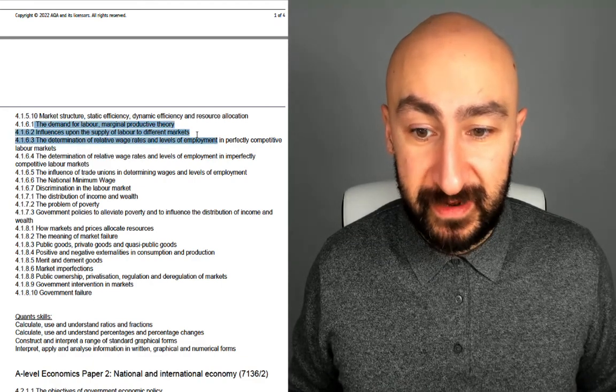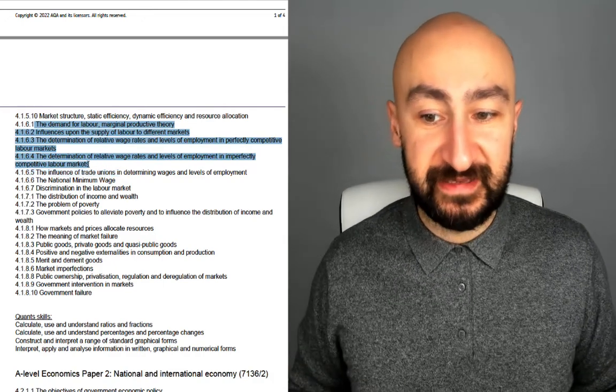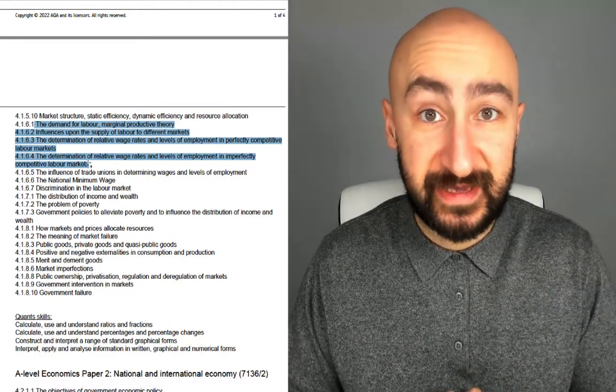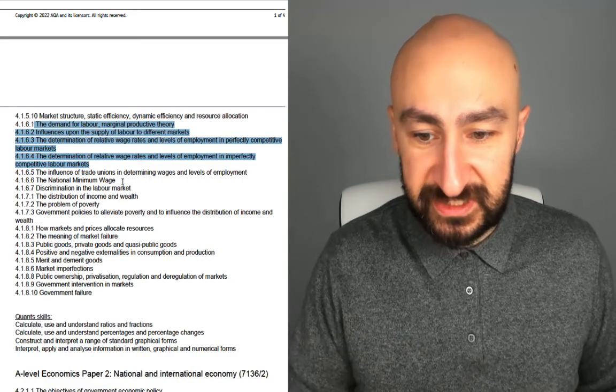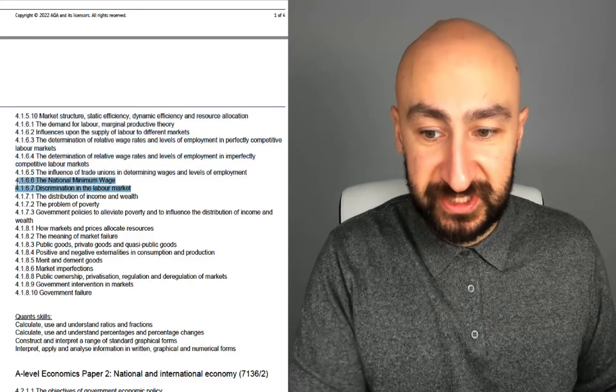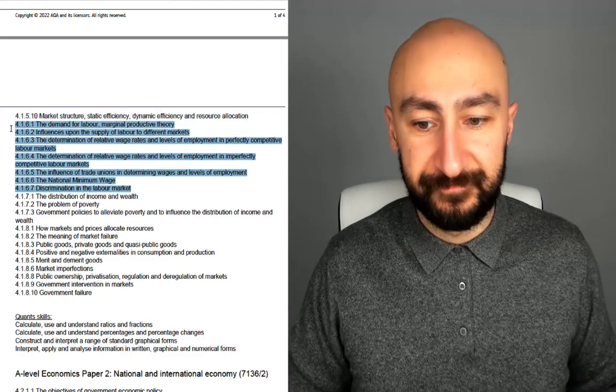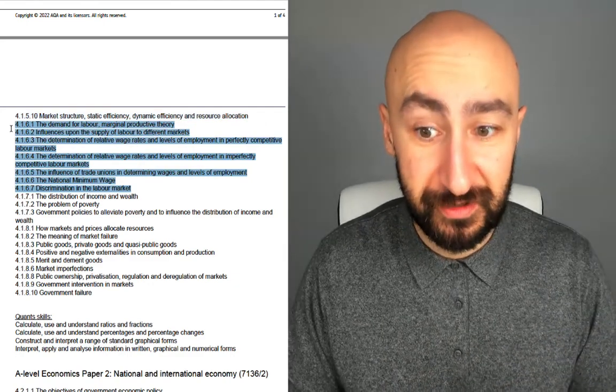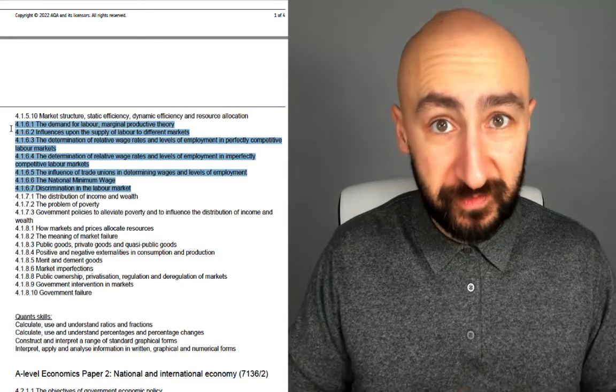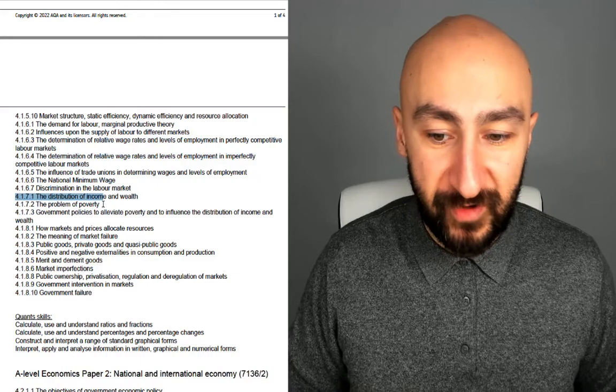The demand for labour and the supply of labour and the relative wage rates in perfectly and imperfectly competitive labour markets. It looks like there's gonna be a big question here on labour markets as well. So there could be a case study. And it looks as though potentially there's gonna be a case study question here because you've got discrimination in the labour market, national minimum wage, the influence of trade unions as well. So all of that might have reference to, or the questions in the case study might reflect all of those points there.